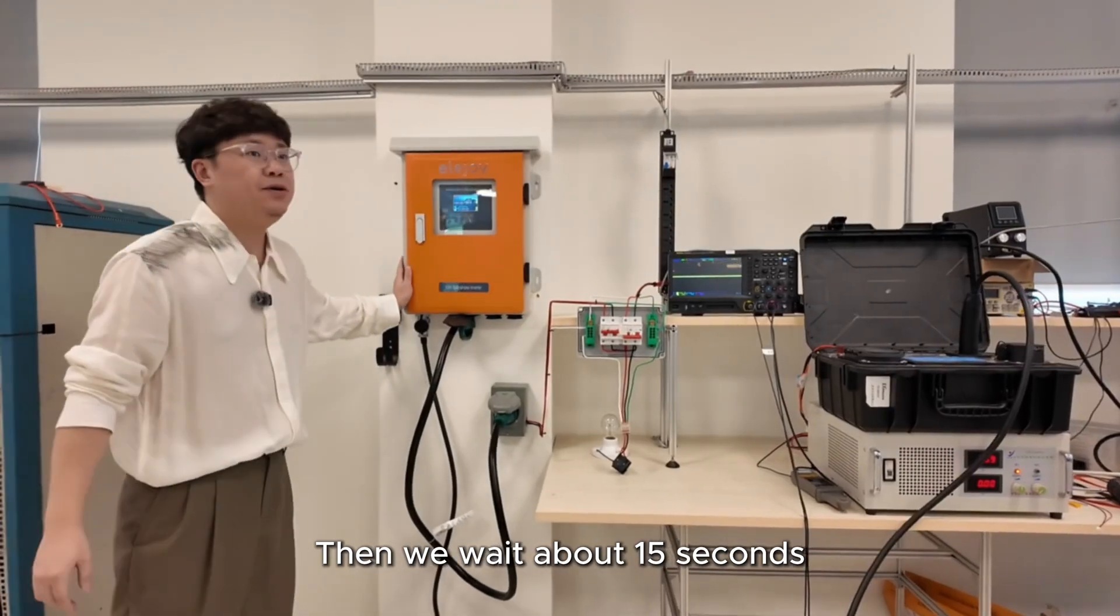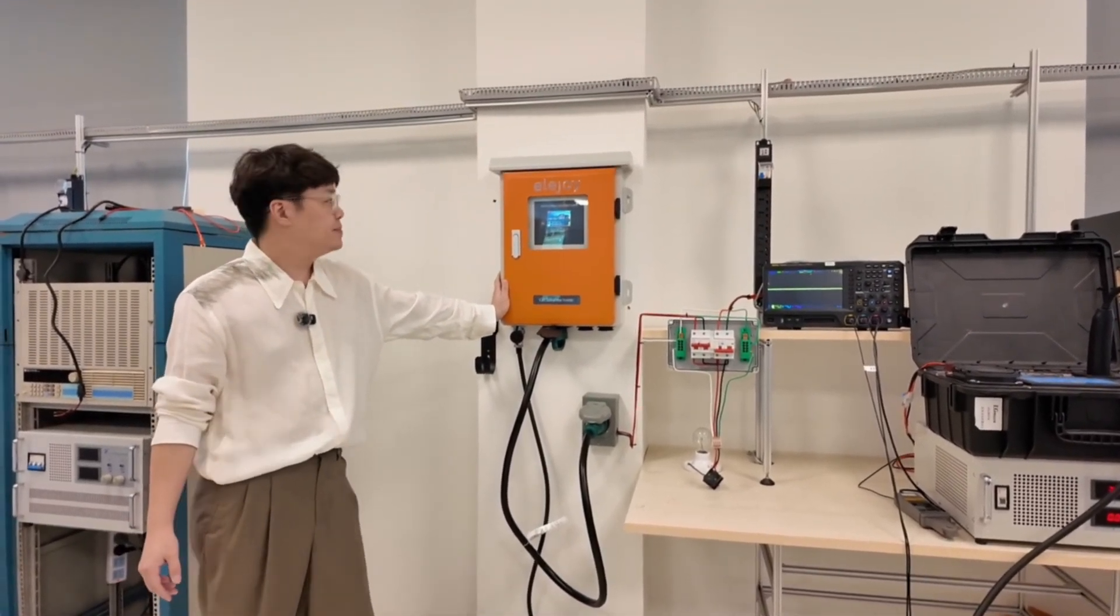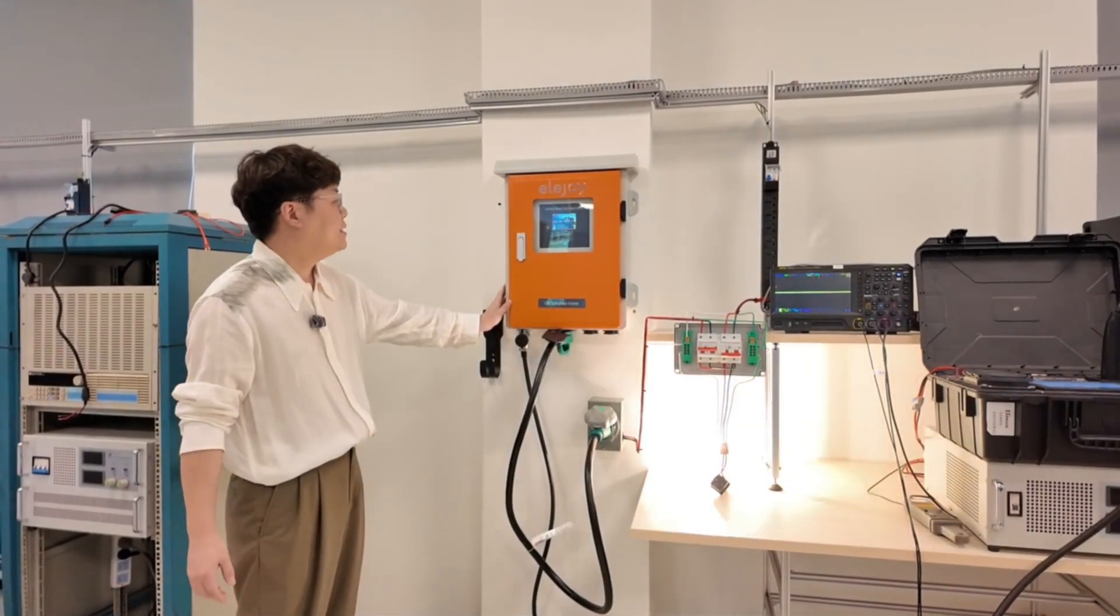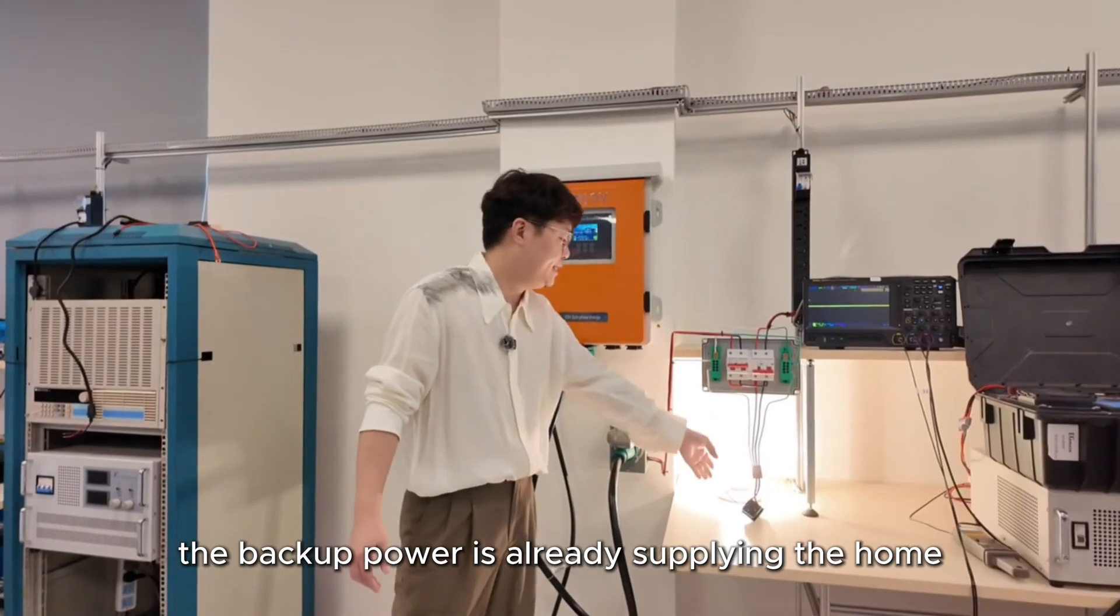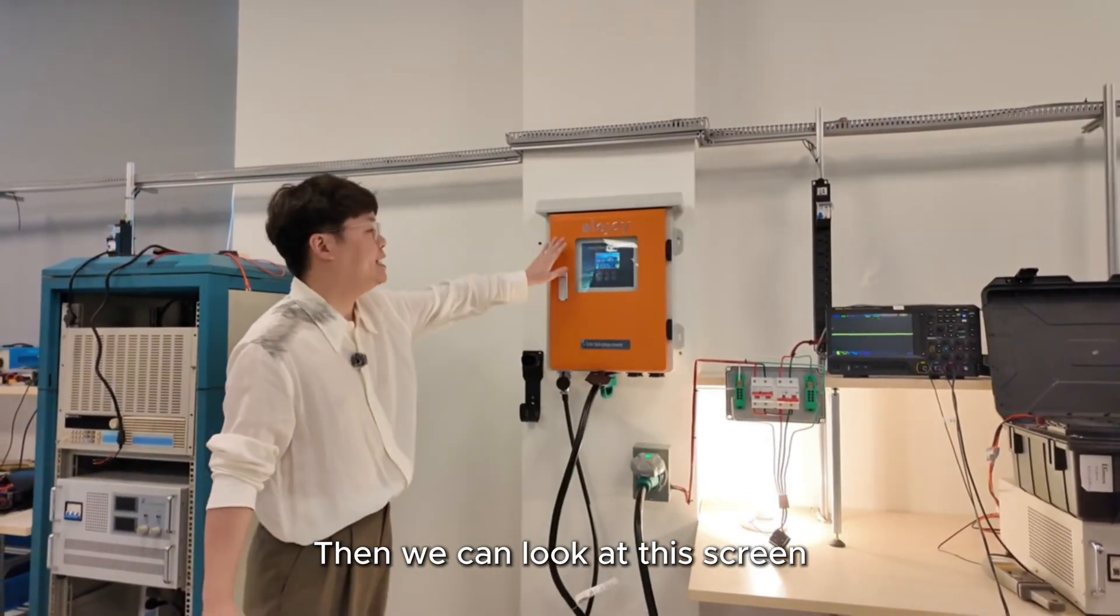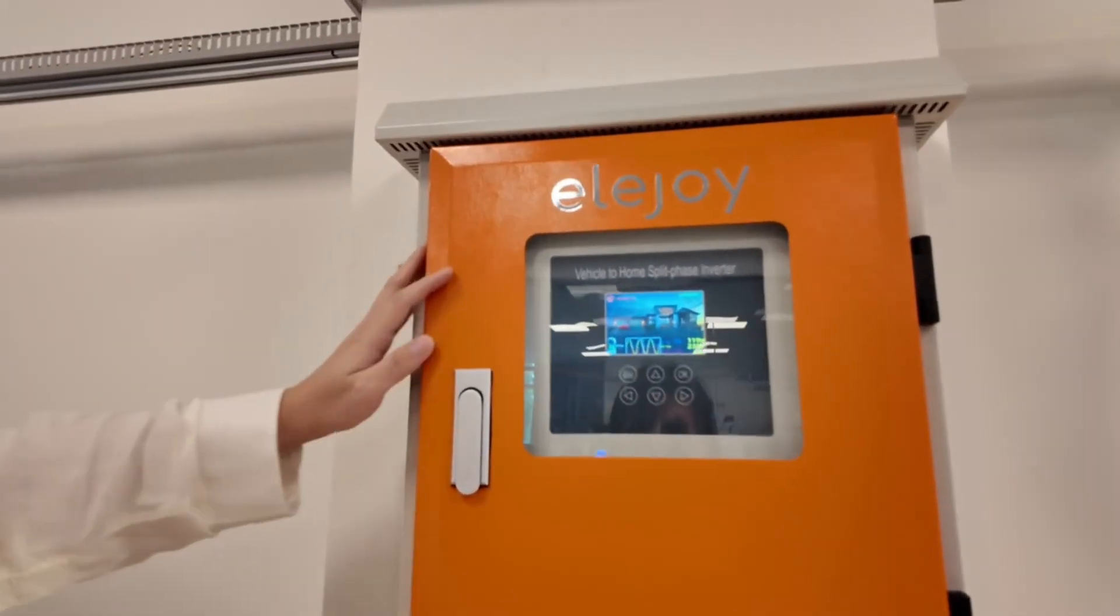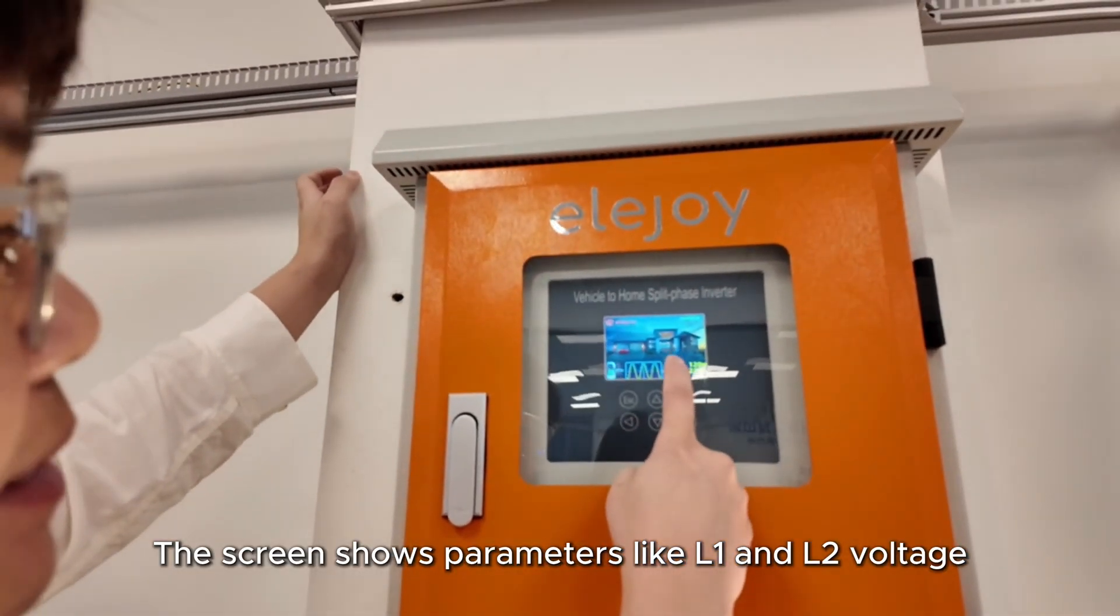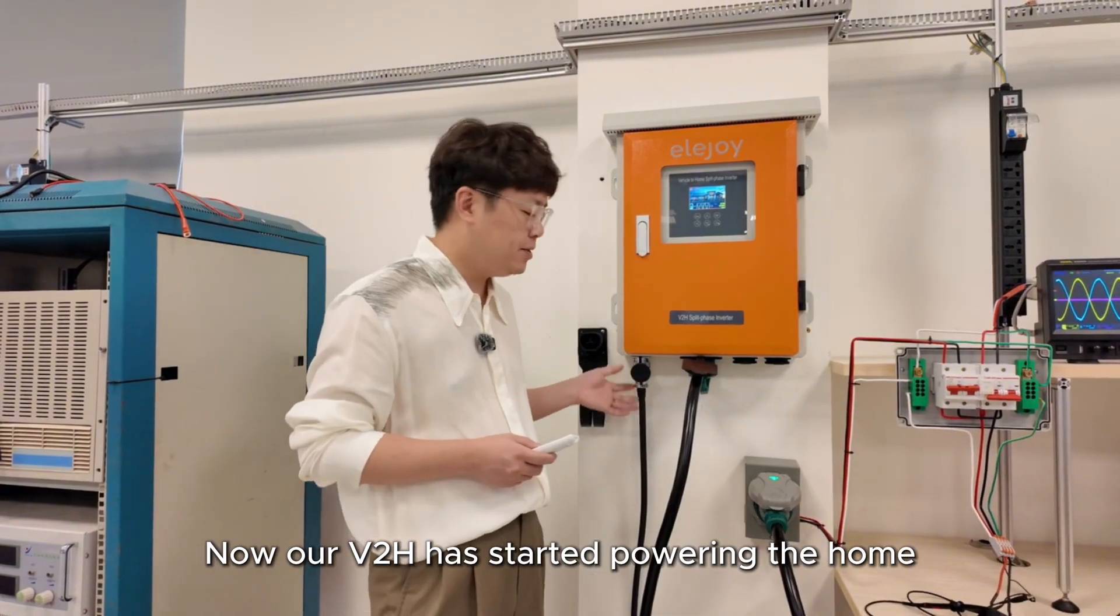Then we wait about 15 seconds. The V2H will connect with the vehicle. At this time we can see the backup power is already supplying the home. Then we can look at this screen. The screen shows parameters like L1 and L2 voltage. Now our V2H has started powering the home.